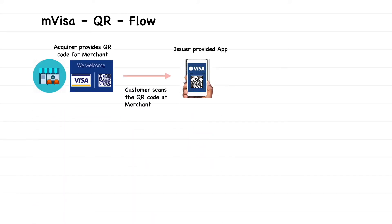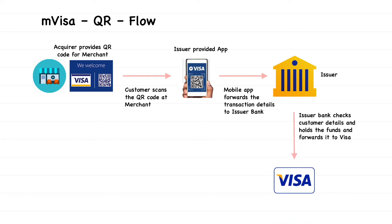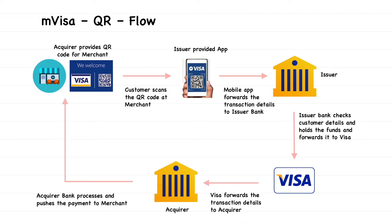Let's start with MVISA QR flow from a business perspective. At a merchant location, the acquirer provides the merchant with the QR code and the customer scans the QR code with an issuer-provided application. The mobile application forwards the transaction details to the issuer bank, and the issuer bank holds the funds, checks the customer details, and then forwards the transaction to VISA. VISA further forwards the message to the acquirer, who credits the merchant with the transaction amount and provides a notification to the merchant.